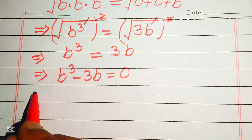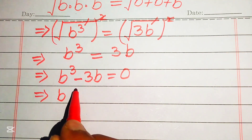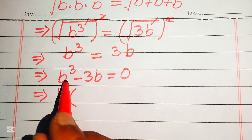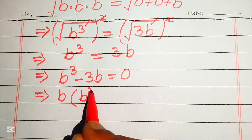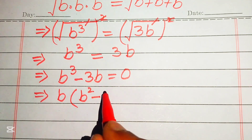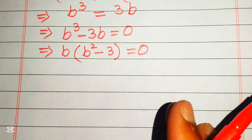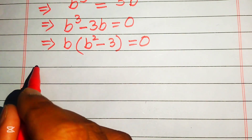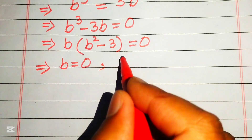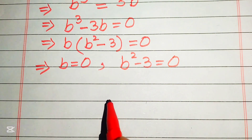We see that b is a common factor in both terms. Taking b as common, we get b times (b squared minus 3) equals 0. We divide this into two cases: the first case is b equals 0, and the second case is b squared minus 3 equals 0.